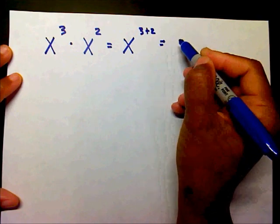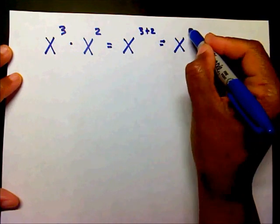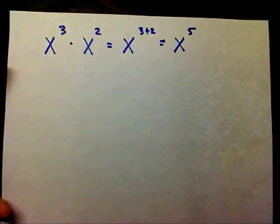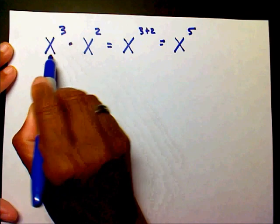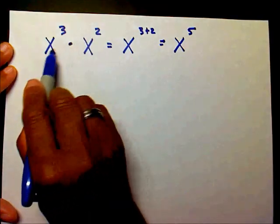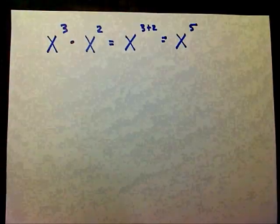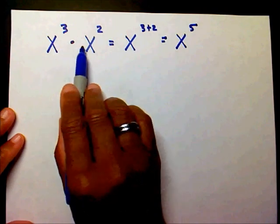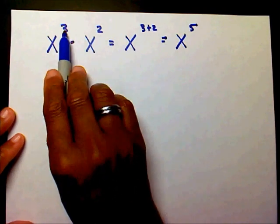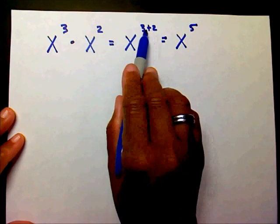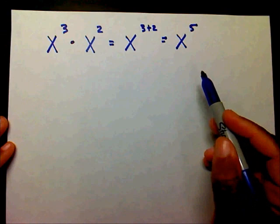So I'm going to keep my same base and add 3 plus 2, which is 5. Whenever you multiply exponents with the same base — if you notice I have two x's here — I'm going to bring my x over and add 3 plus 2. Well, 3 plus 2 is 5, so therefore x to the fifth power is the answer.